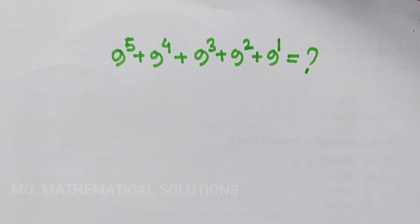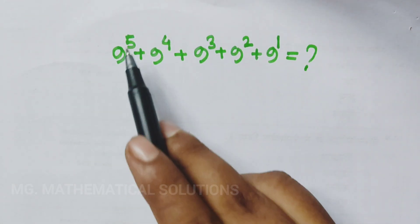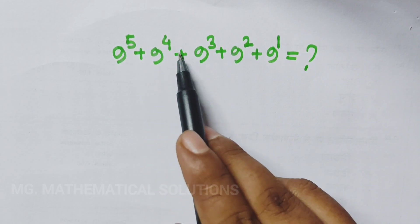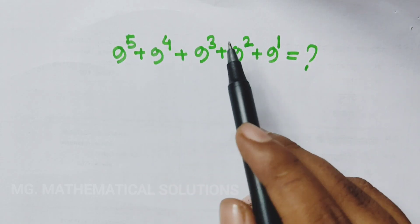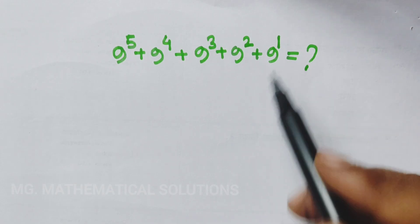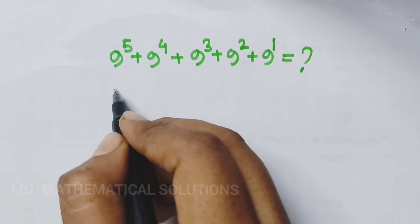Hello students, welcome to our channel NG Mathematical Solutions. Today I solve a nice math olympiad exponential problem. The problem is: 9 to the power 5, plus 9 to the power 4, plus 9 to the power 3, plus 9 to the power 2, plus 9 to the power 1 — equal to what? Let's see the solution.